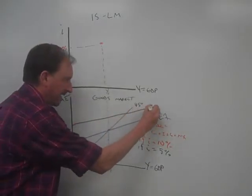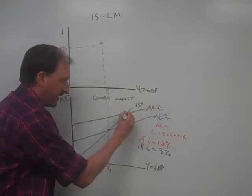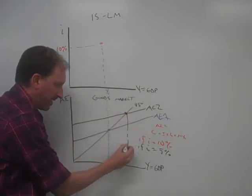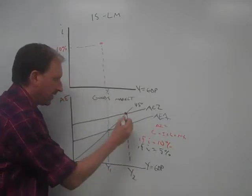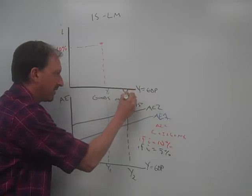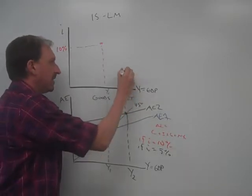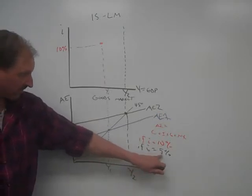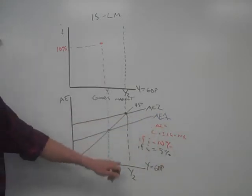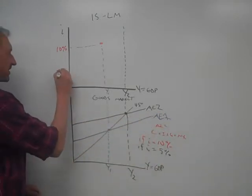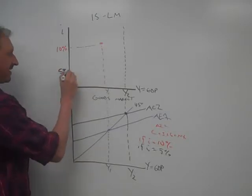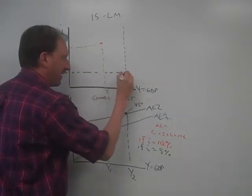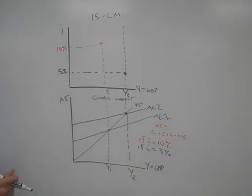Then AE might move to AE2, and then now that's macroeconomic equilibrium. We'll call that Y2. So it's somewhere along that line, right? And then we know if interest rates are 5%, then AE2 is going to be there, so then Y is going to be there. Let's pick a point over here that's 5% and find that. We know that point is on the IS curve.